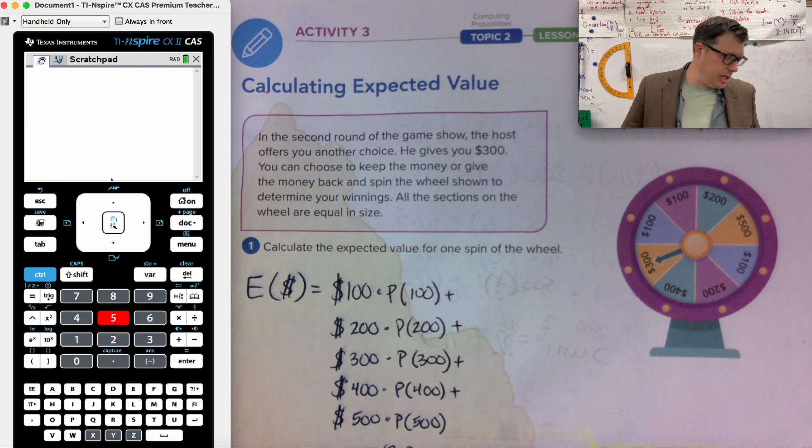I guess I'm stuck right now because my answer key is saying that the probability of winning 100 is two out of eight. The probability of getting 200 is one out of eight. One eighth. Intriguing. Do we get to keep the money? You can keep the money or give the money back and spin the wheel.